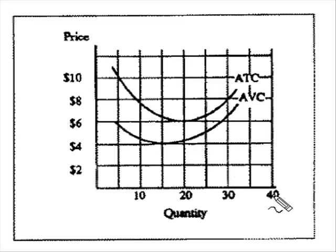Okay, using this graph, if we were to draw in a properly drawn marginal cost curve which crosses the ATC and the AVC, at what level of output should the marginal cost curve cut the ATC curve?